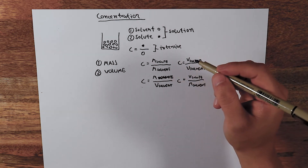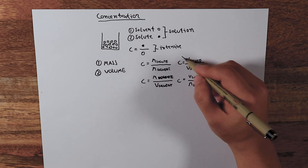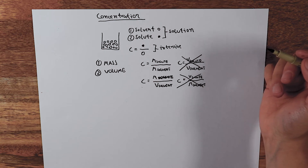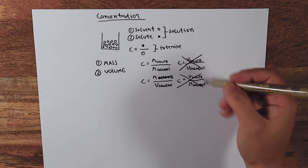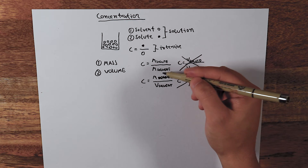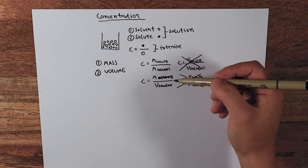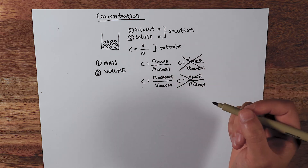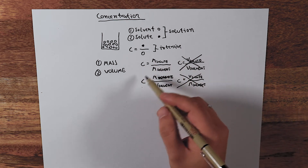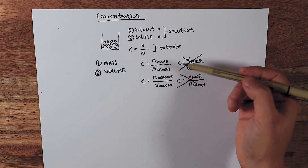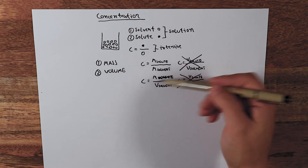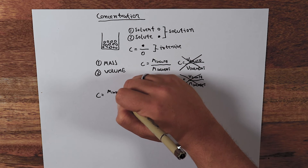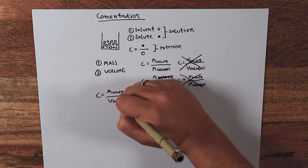In hydroponics we usually use salts as the solute, because fertilizers are salts. Measuring the volume of a salt is quite hard, so we never use units that require measuring the volume of a solid. Volume-to-volume concentrations are used in many other areas of chemistry, but not in hydroponics. We mainly use units where we are concerned with the mass of the salt, measured as a ratio to the mass or volume of the solvent.